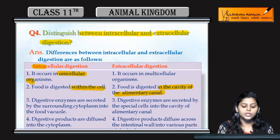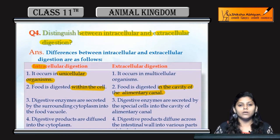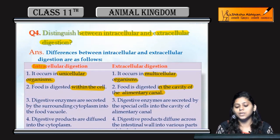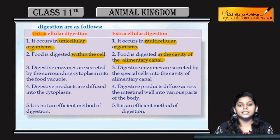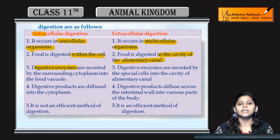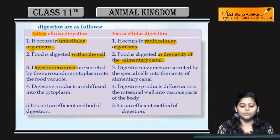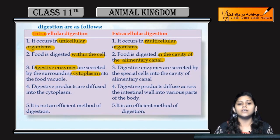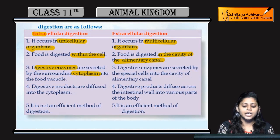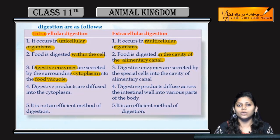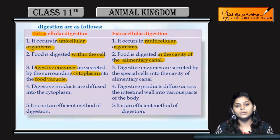Intracellular digestion occurs in unicellular organisms, whereas extracellular digestion occurs in multicellular organisms. In intracellular digestion, the digestive enzymes are secreted from the cytoplasm into the food vacuole, and digestion takes place inside the food vacuole.